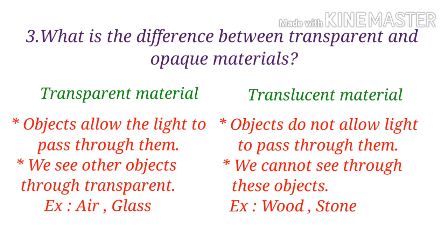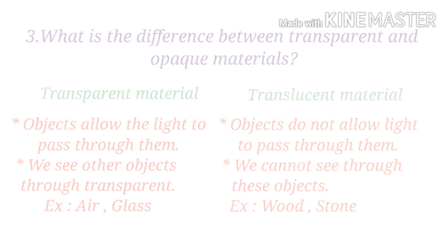Third question: what is the difference between transparent and opaque materials? Transparent — objects allow the light to pass through them. Opaque — objects do not allow light to pass through them. Transparent — we see other objects through transparent. Opaque — we cannot see through these objects. Transparent example: air, glass. Opaque example: wood, stone.